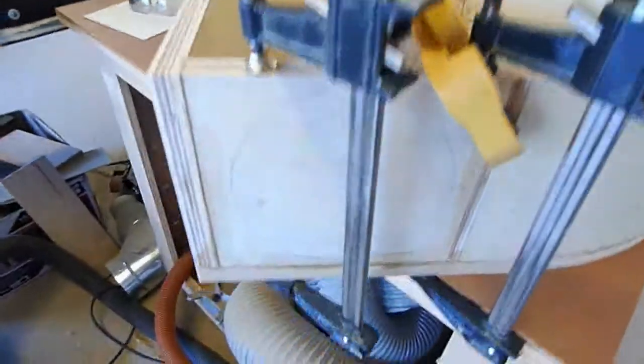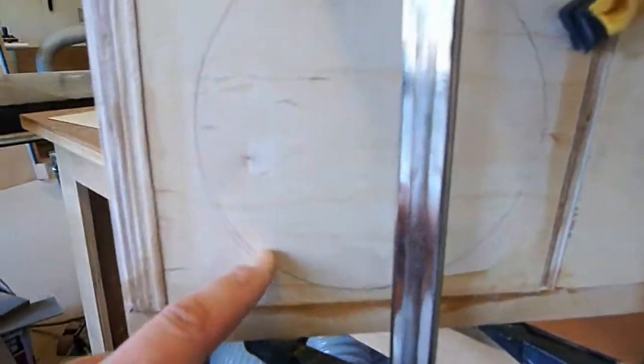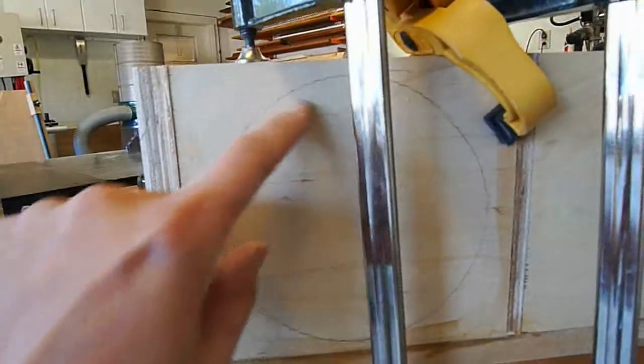I also went ahead and marked it here, a rough thing, by putting on the inlet port to get our 6-inch diameter.